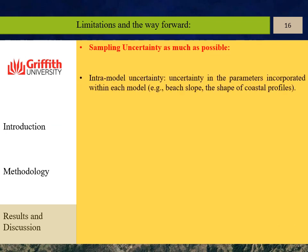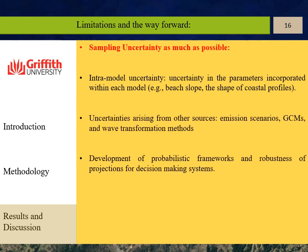In this study, inter-model uncertainty was investigated. However, intra-model uncertainty could also be important — for example, the effect of different model settings, different coastal profiles, different beach slopes, and different free parameters. Sampling uncertainty from other main sources such as emission scenarios, global circulation models, and wave transformation methods is required to develop probabilistic frameworks. Such frameworks would tell us how robust the projections are for decision-making systems.